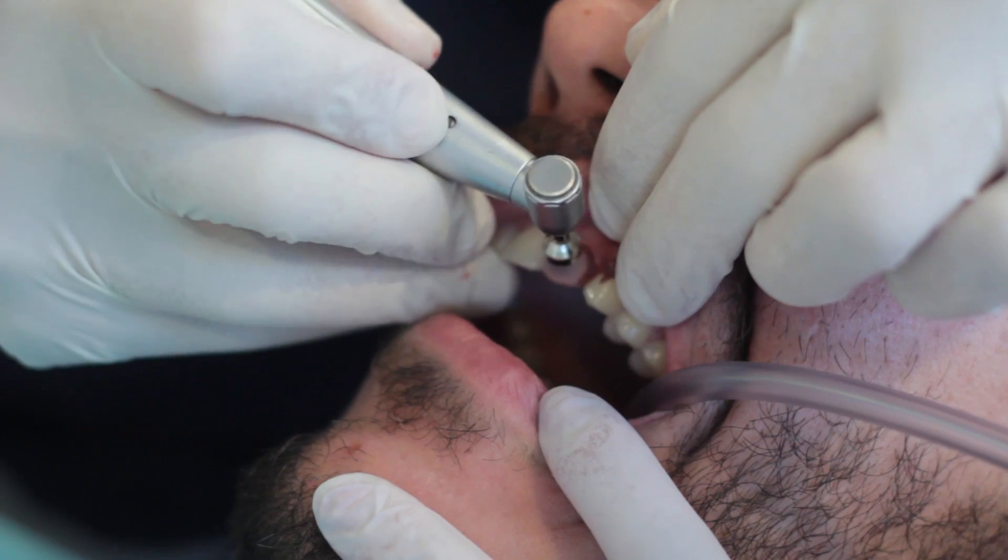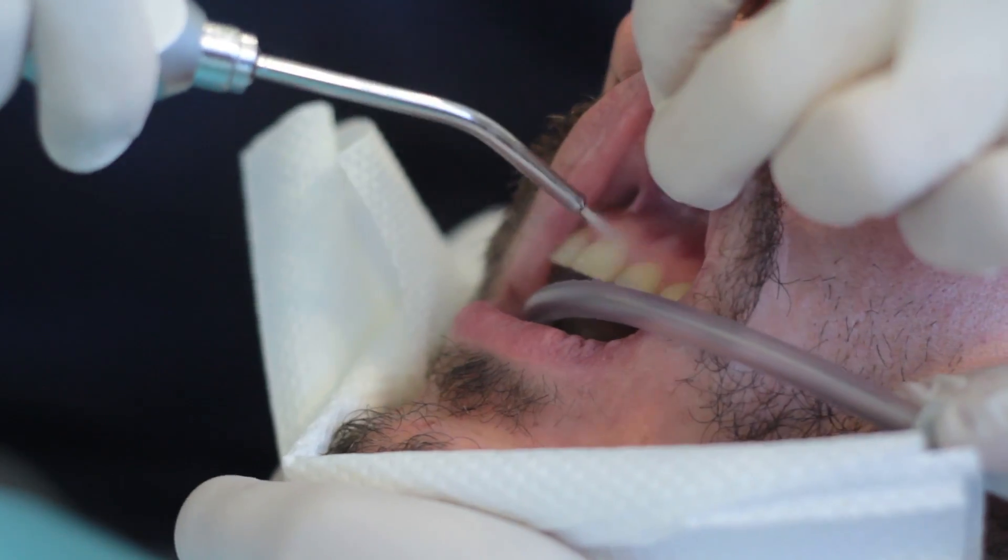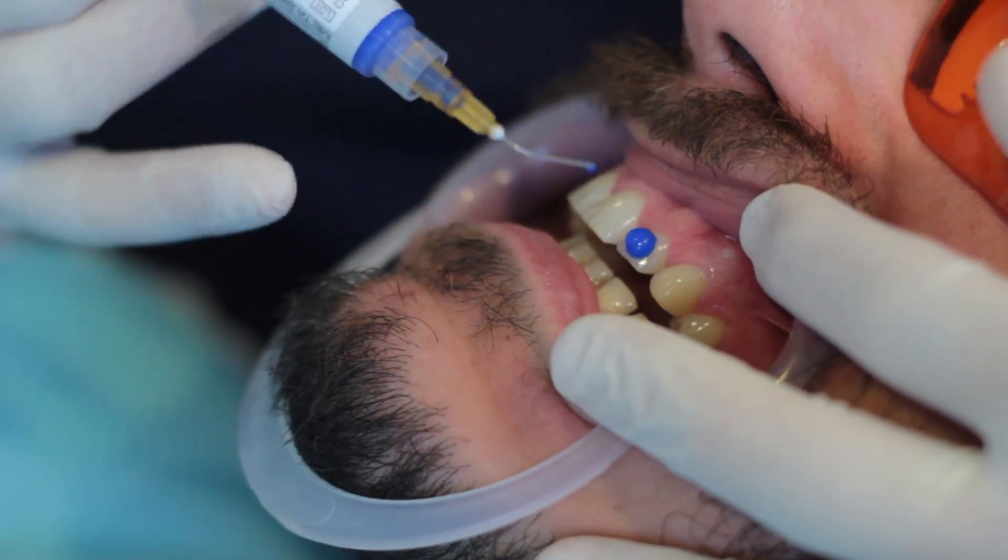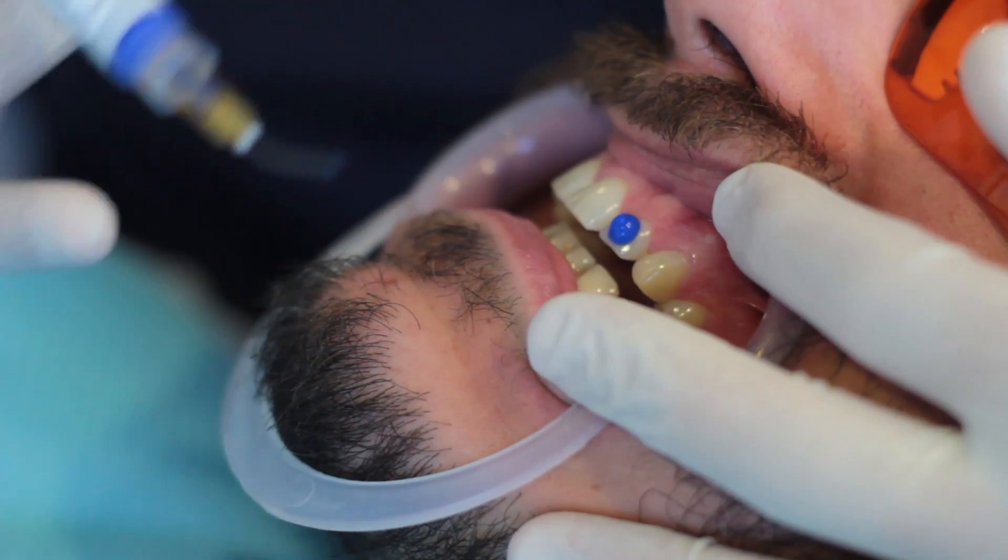Prepare the teeth by cleaning the tooth surface, polishing, drying and isolating the tooth. We then apply the phosphoric acid to etch the area where the attachment will be placed.